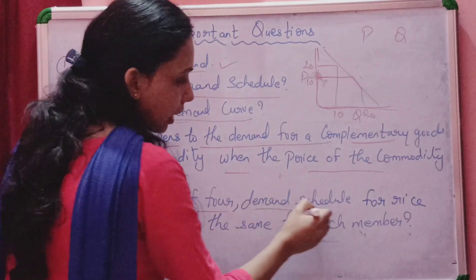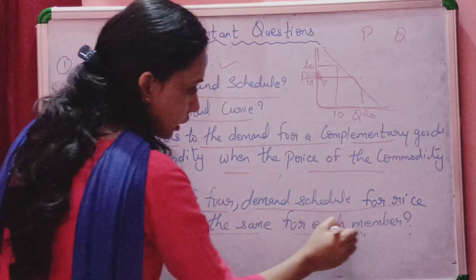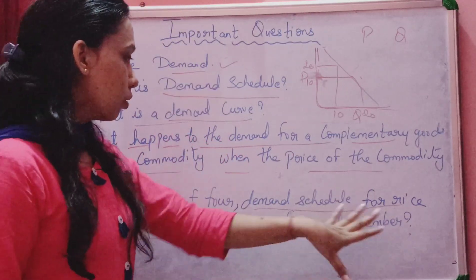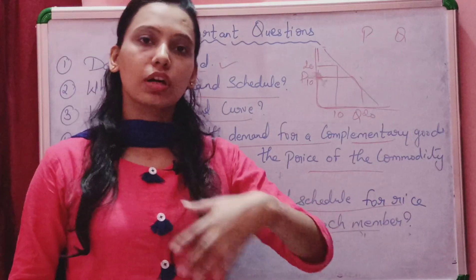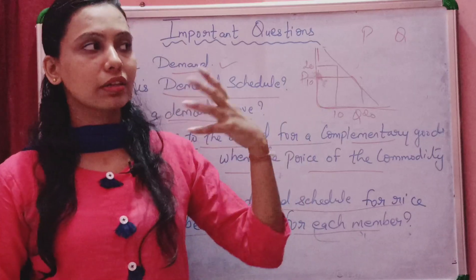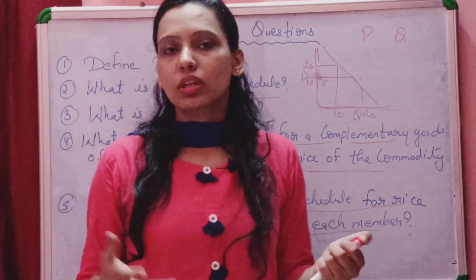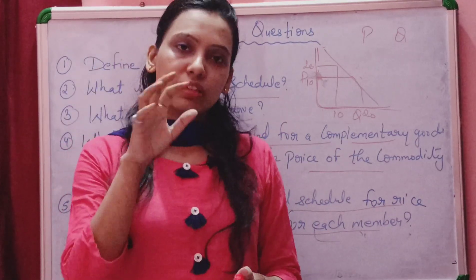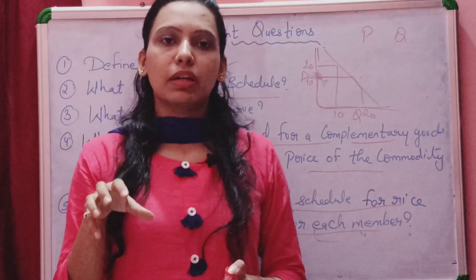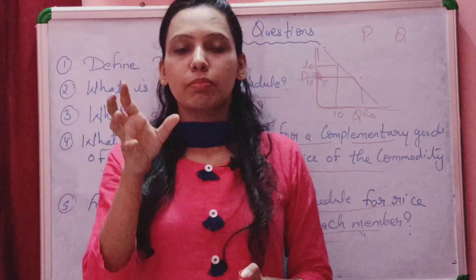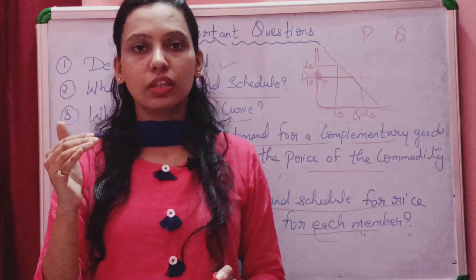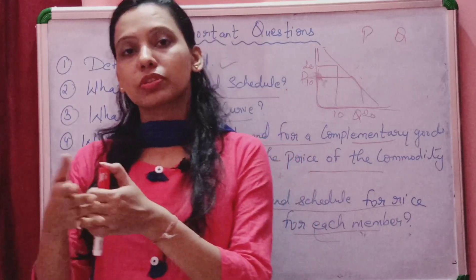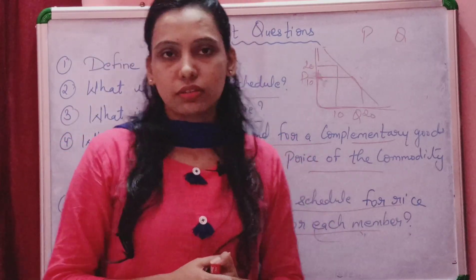Next logical question: for a family of four, should the demand schedule for rice be the same for each member? If you have four members in a family demanding rice, it depends on the taste and preference of each person. Maybe one person likes rice but another does not. So when we make a demand schedule, the quantity demanded will not be equal for all members, because everyone's taste and preference is different. So the answer is false.